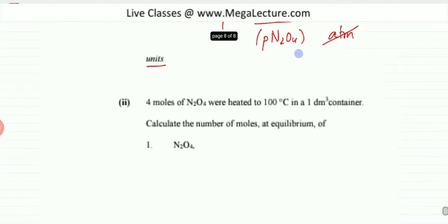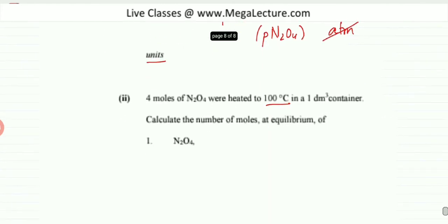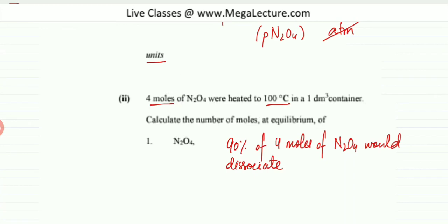The next part states that 4 moles of N2O4 were heated to 100 degrees centigrade in a 1 dm³ container. At 100°C, N2O4 is 90% dissociated, so 90% of 4 moles — that is 3.6 moles — would dissociate.